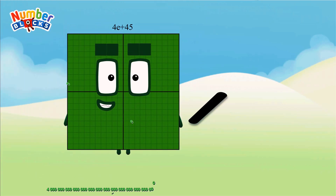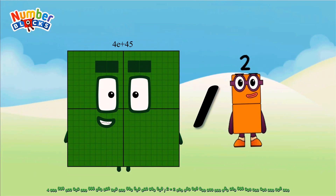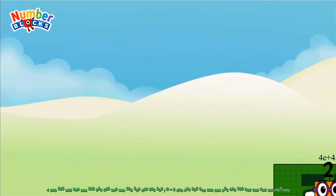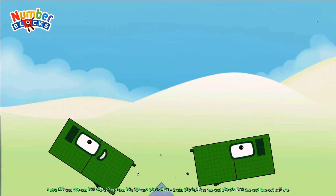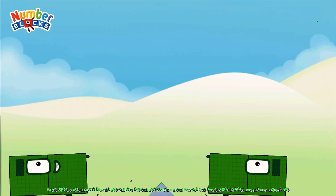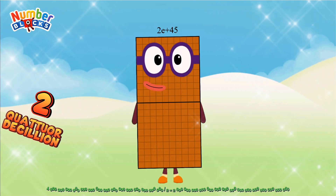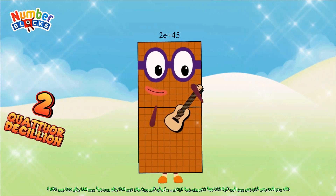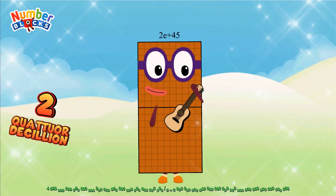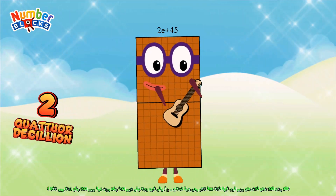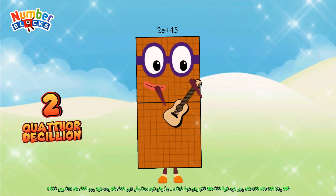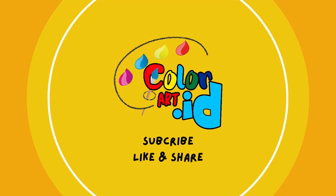Four duodecillion divided by 2 equals 2 duodecillion.